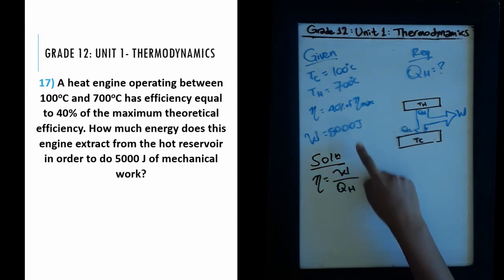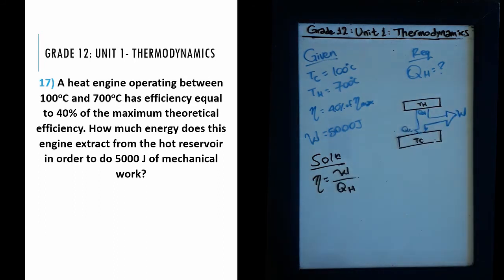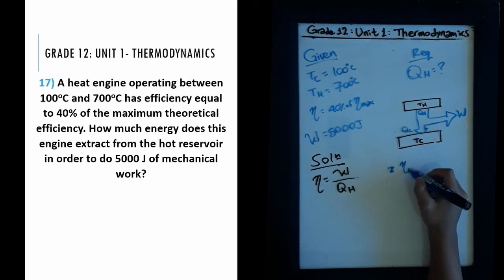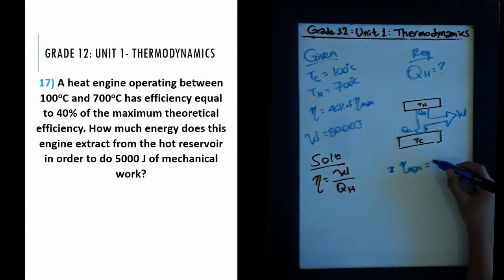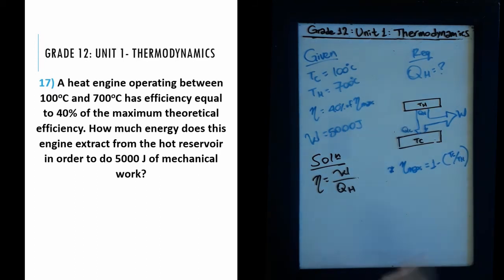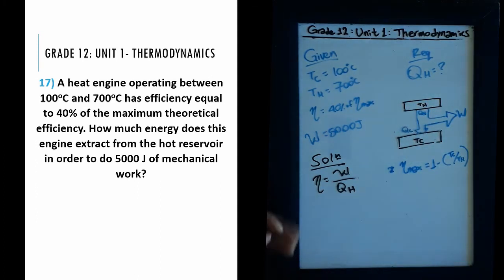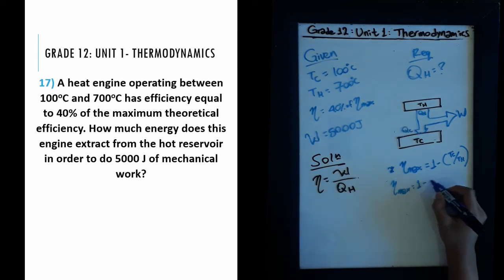We have the work done, and we need to find the input energy Q_H from the hot reservoir. But first, we need to know the maximum theoretical efficiency. The maximum efficiency — which is completely theoretical and impossible to achieve — is given by the formula: 1 minus T_C over T_H. It uses the temperatures of the two reservoirs. So let's find this maximum efficiency.